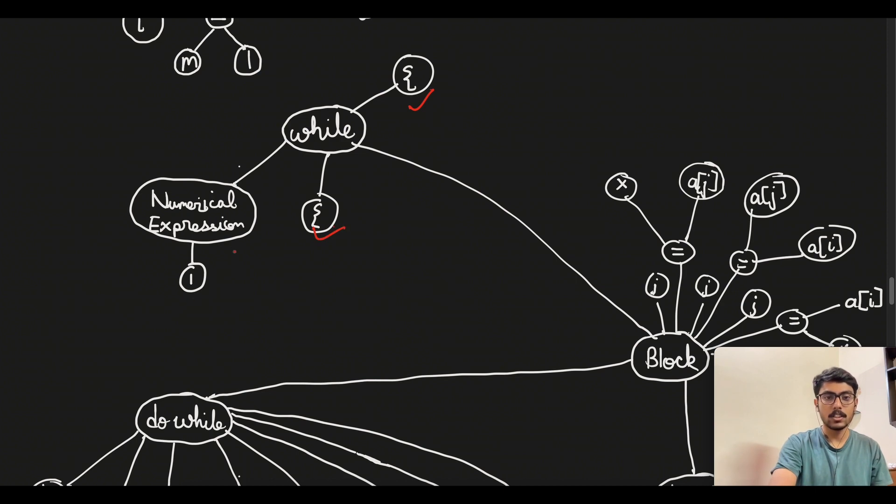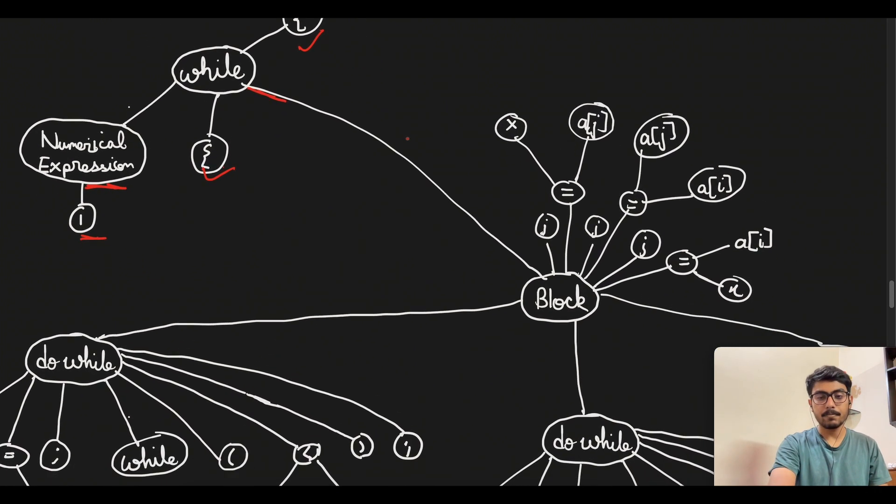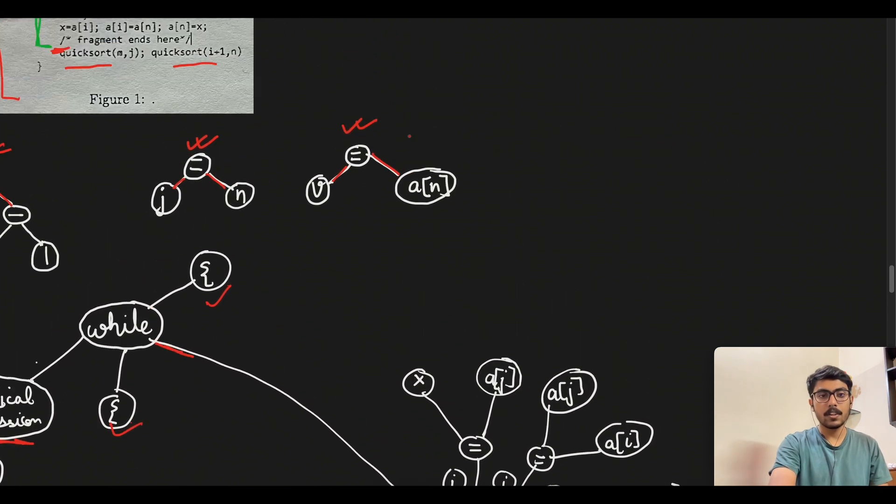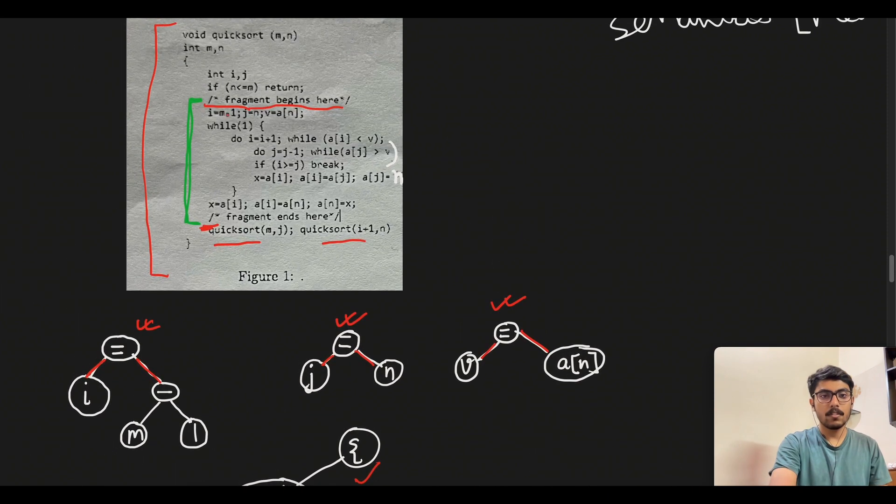It has a numerical expression one and basically the block is residing between these two curly braces. While one, this is a numerical expression block, it has one in it and then we have the curly braces. Inside the curly braces we have another block.